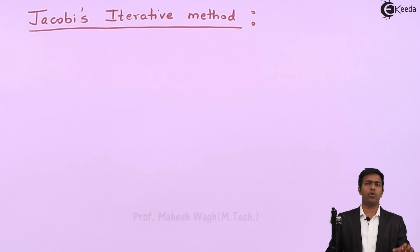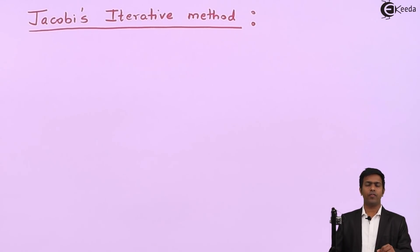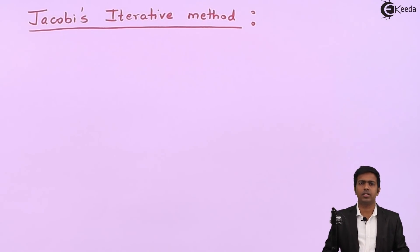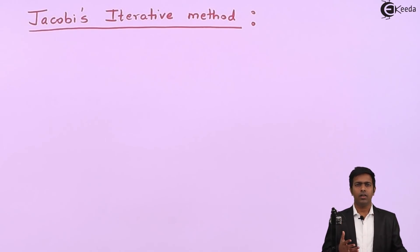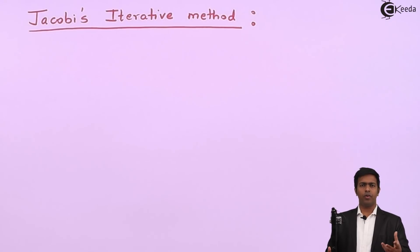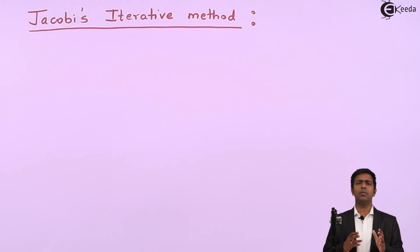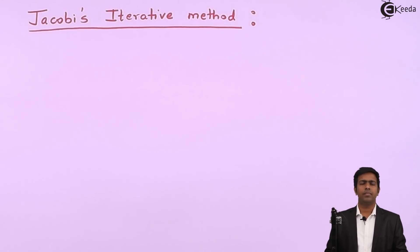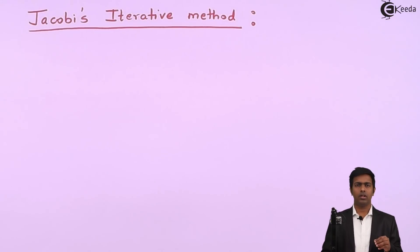In this video we are going to learn a new concept called Jacobi's iterative method. Whenever we have simultaneous linear equations and want to find the unknowns, there are many methods available. You must have done Cramer's rule, Gauss elimination, or Gauss Jordan. Jacobi's iterative method is one of them — by using this method you can solve simultaneous linear equations.